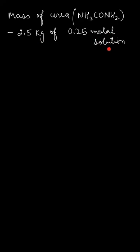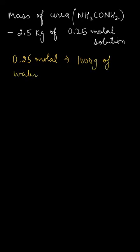So here we know that the 0.25 molal solution means that 1000 grams of water contains 0.25 moles of urea, because we know that the molality is given by the number of moles of solute dissolved per kg of the solvent.